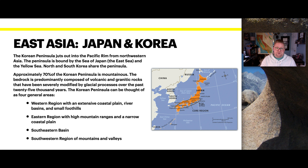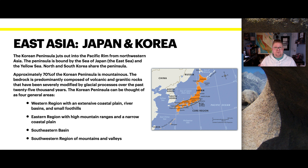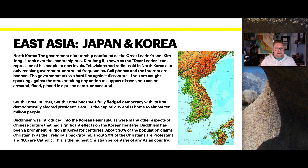The Korean Peninsula juts out into the Pacific Rim from Northwestern Asia, bound by the Sea of Japan to the east and the Yellow Sea. North and South Korea share the peninsula, and about 70% of it is mountainous, with bedrock predominantly composed of volcanic and granite rocks modified by glacial processes over the last 25,000 years. The peninsula can be thought of as four general areas: the western, eastern, southern, and southwestern regions. I've had students from South Korea, and the landscape actually reminded me a lot of Northern California, Oregon, and Washington — those mountainous volcanic ranges. It's quite a beautiful landscape.